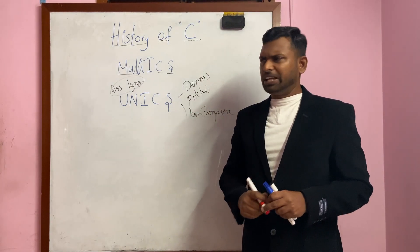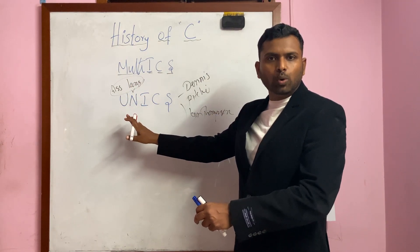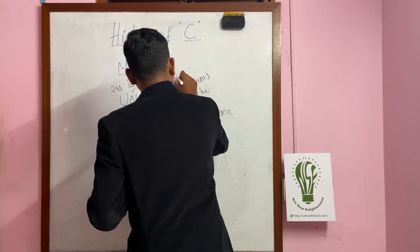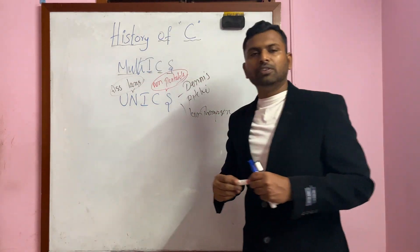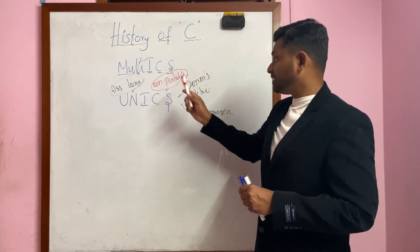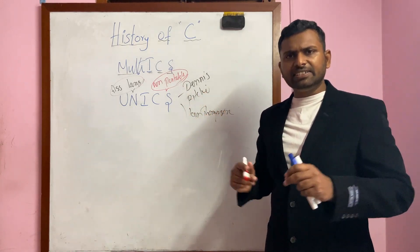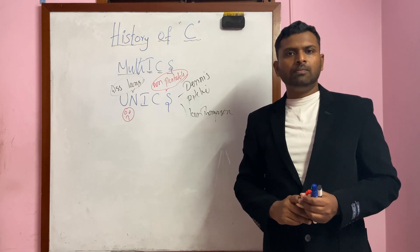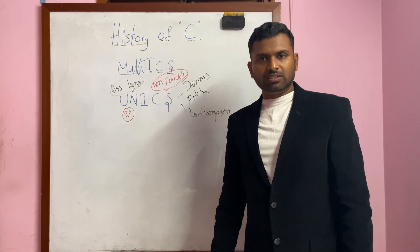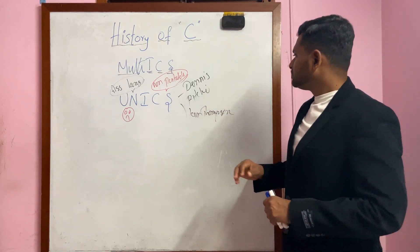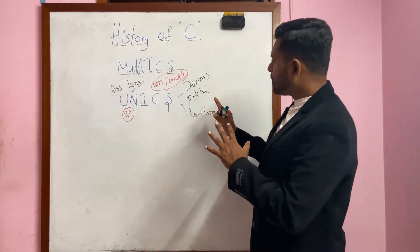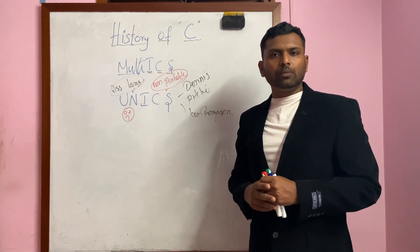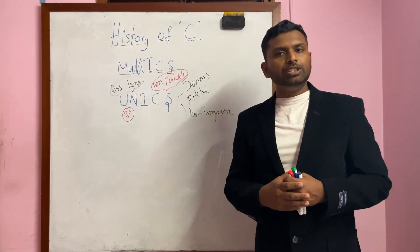The same problem occurred for the UNIX operating system. Everything was perfect — the development was over — but one problem occurred: non-portability. Everything was perfect about UNIX except the portability issue. People were excited but not happy with UNIX because it was developed using assembly language, which is not portable at all. So Dennis Ritchie and Ken Thompson wanted to redesign UNIX in a different programming language, but unfortunately there was no suitable programming language available at that time.